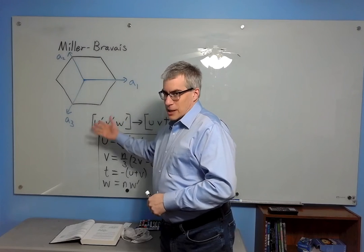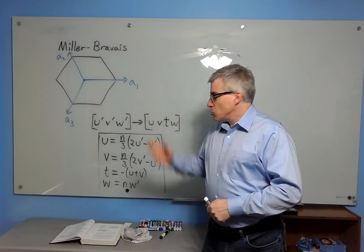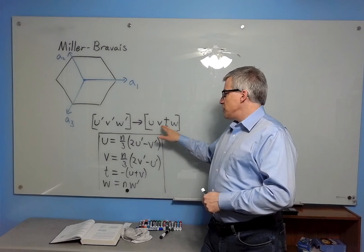We could talk about essentially x, y, z, u prime, v prime, w prime. So why do we switch over to this u, v, t, w?